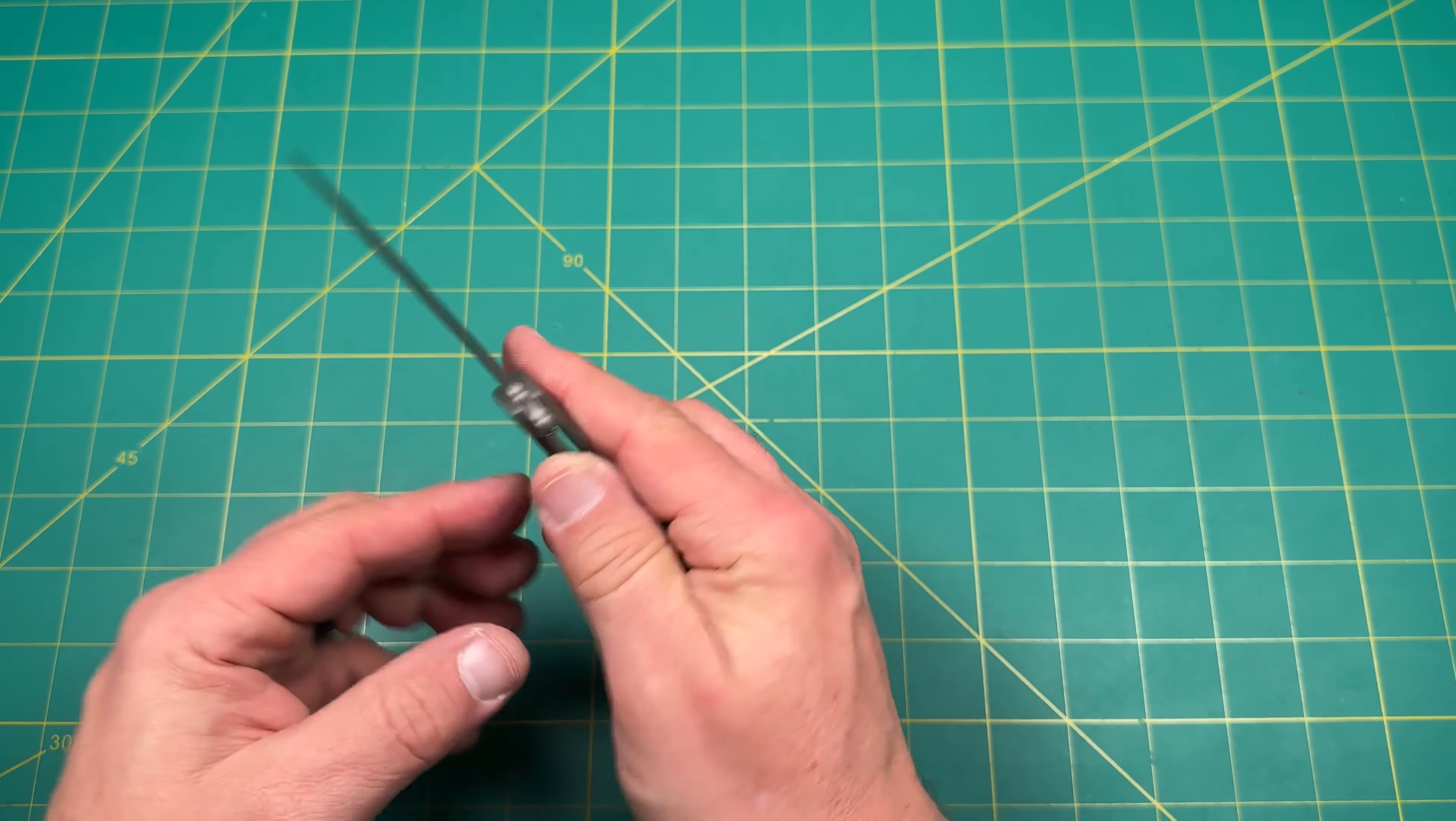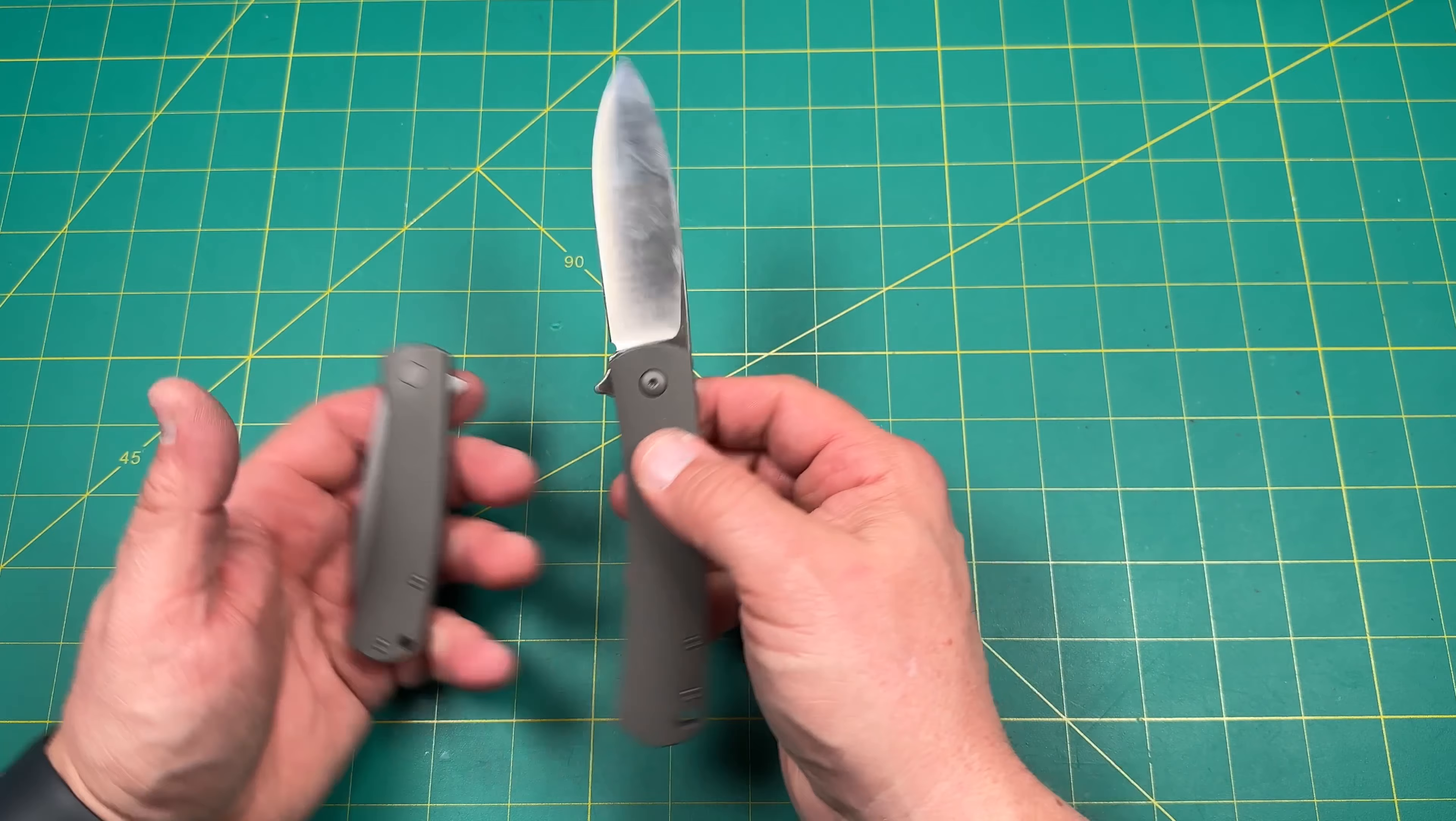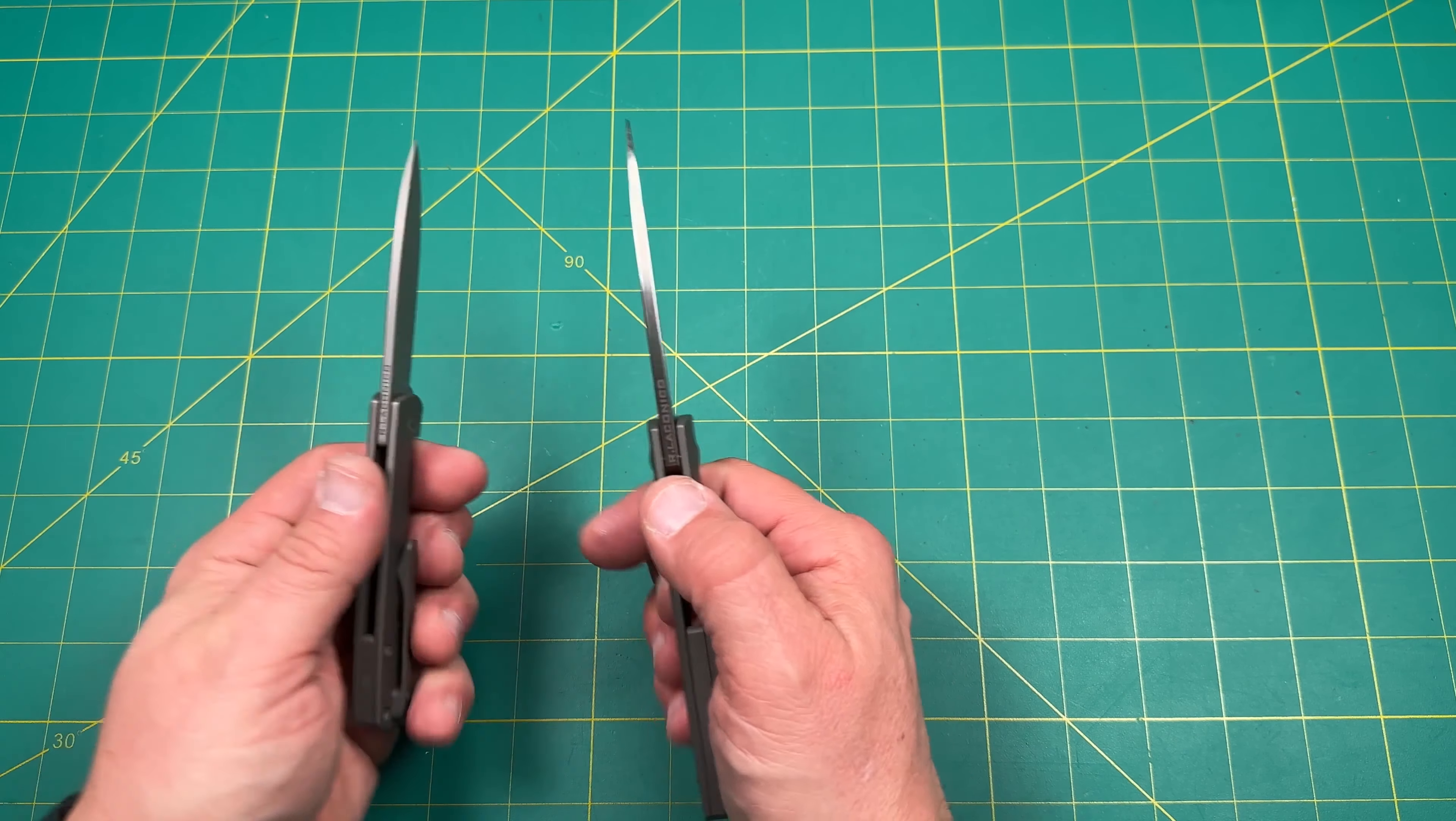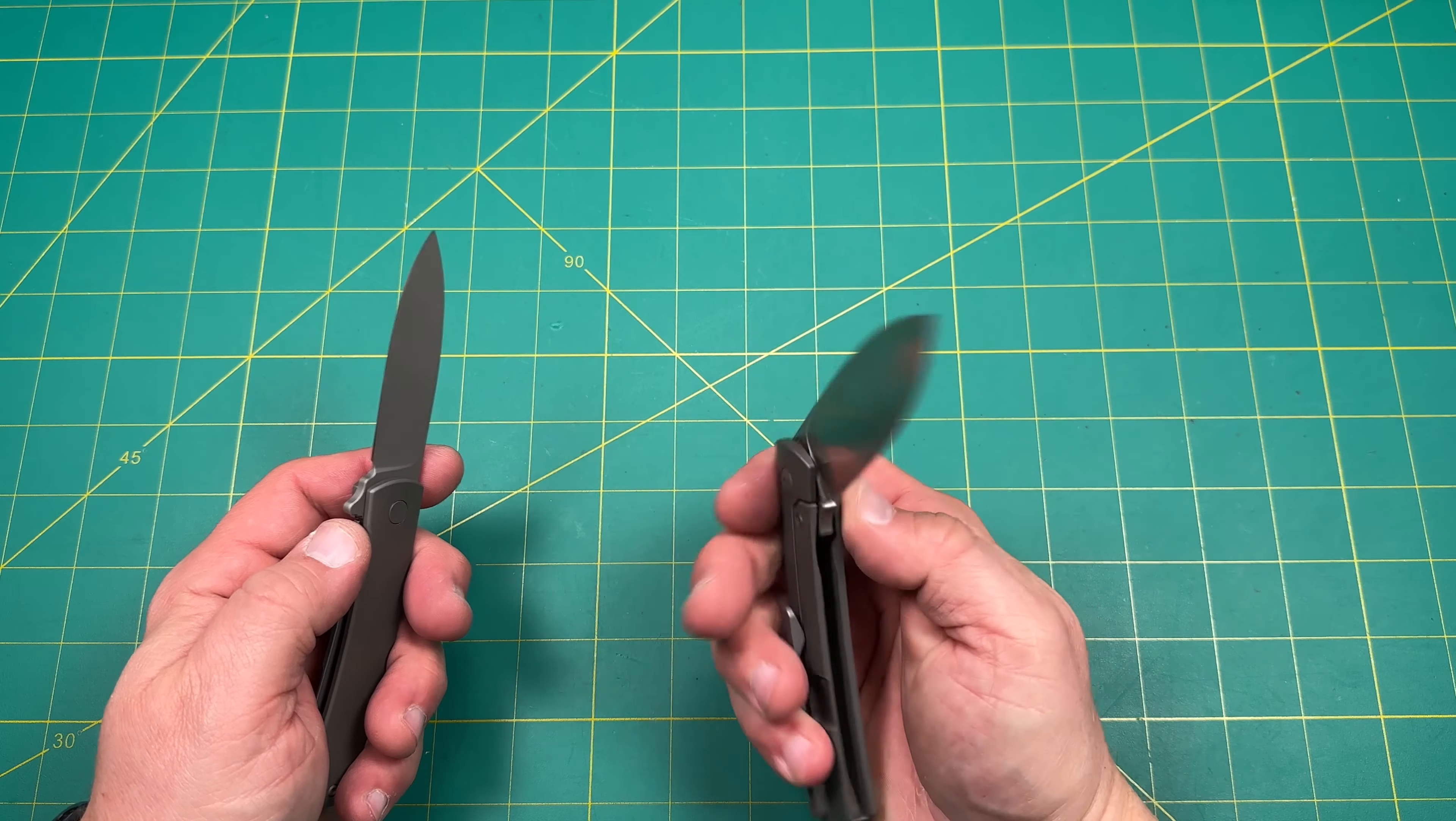It is an S35VN blade steel. You can see the typical Ray Lacanico name on the back. The Mini Keen is kind of like the little brother to the Keen. This is the Ray Lacanico full Keen. They didn't have a polished blade finish. Obviously this is much bigger, much thicker, and obviously a much bigger blade.